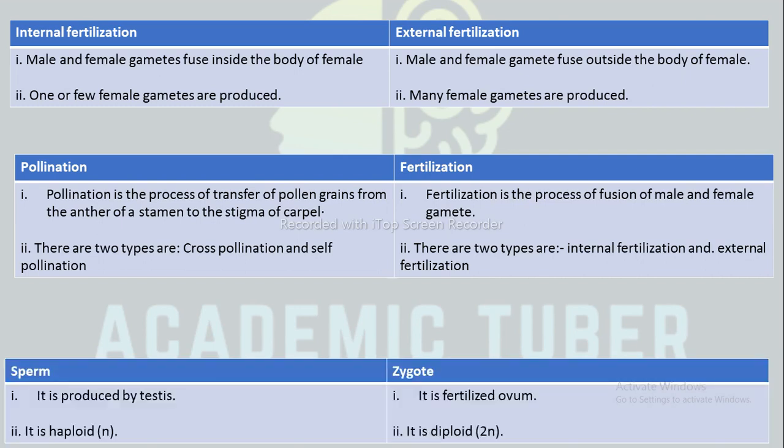The next difference is between sperm and zygote. Sperm is produced by the testes, which is the male gonad. Zygote is a fertilized egg. Sperm is haploid, meaning it contains only n number of chromosomes, whereas zygote is diploid because it contains 2n chromosomes — n from the male and n from the female.